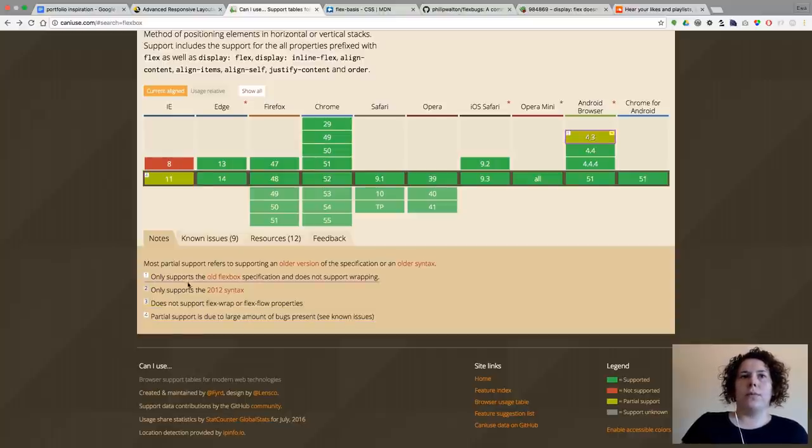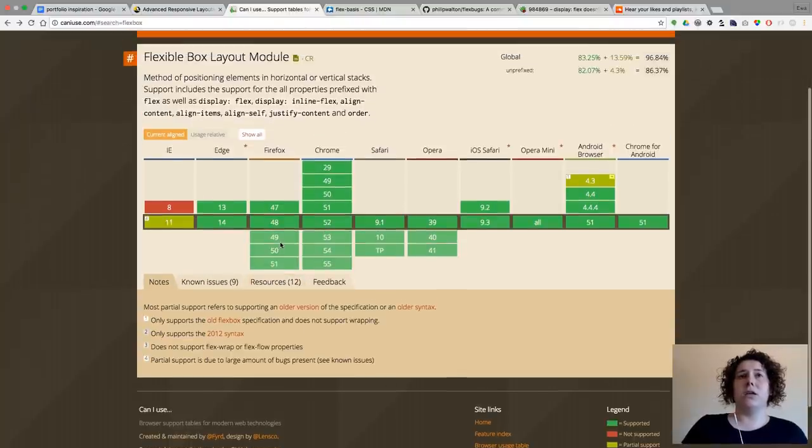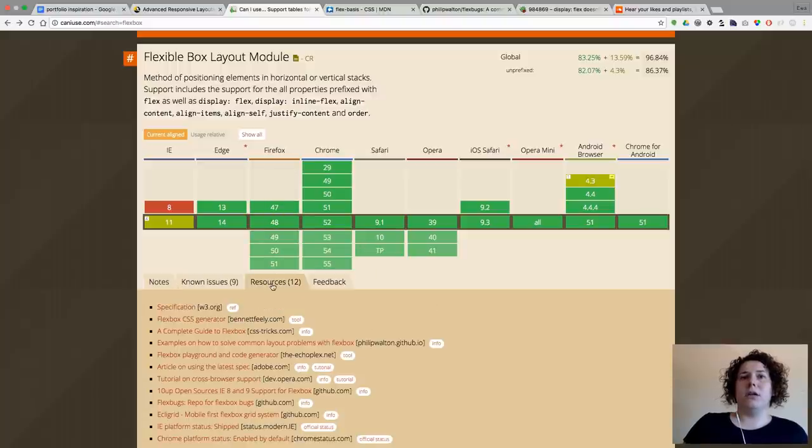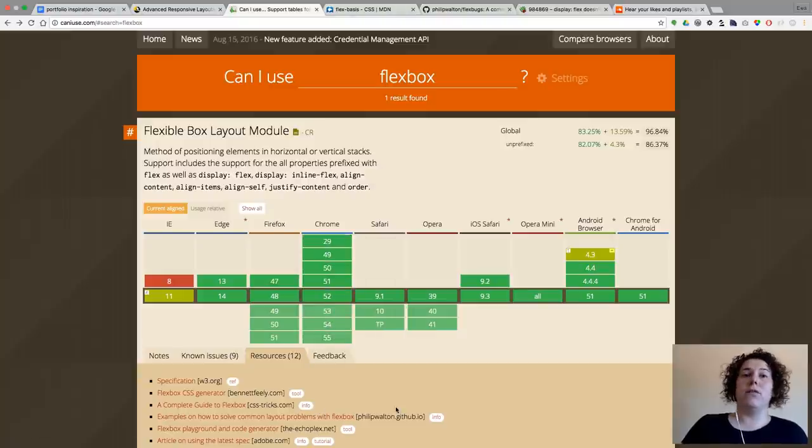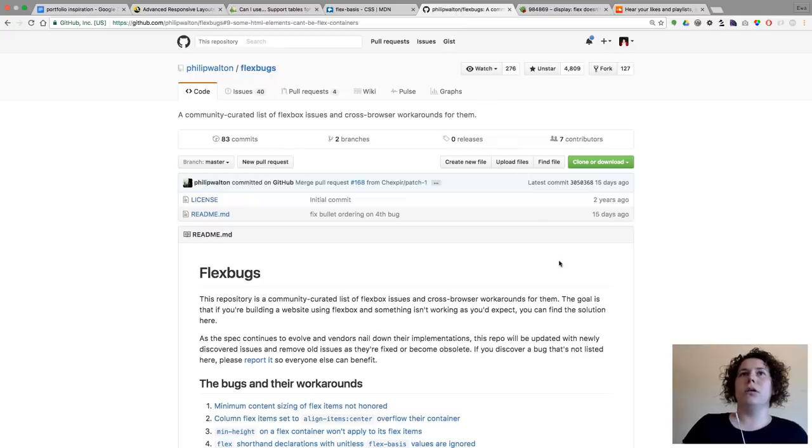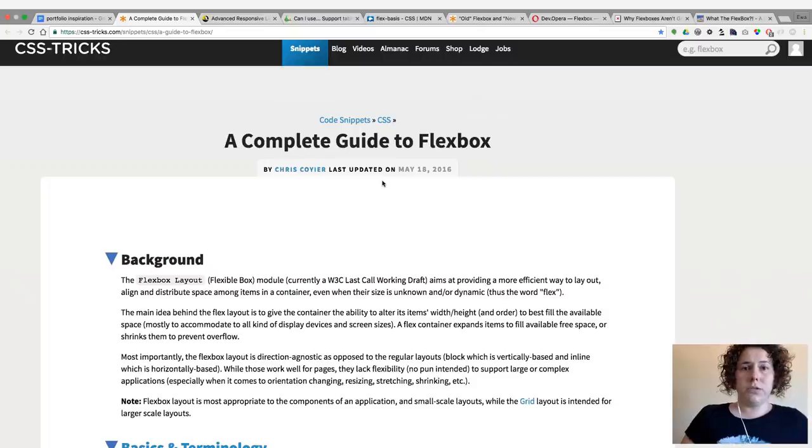You see which versions are supported to which extent, where there are some problems like partial support due to a large amount of bugs or only supporting a different syntax. And what's great also about this page, caniuse.com, is that you also have resources suggested. And here you can find a lot of useful links. One of the links that I found here just by searching the page was this one, which is the Git repo about known Flexbox issues and cross-browser workarounds for them. Another very useful resource.